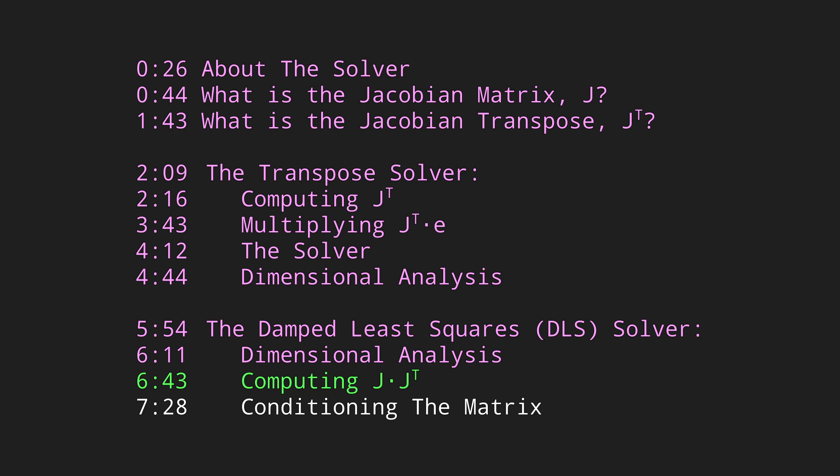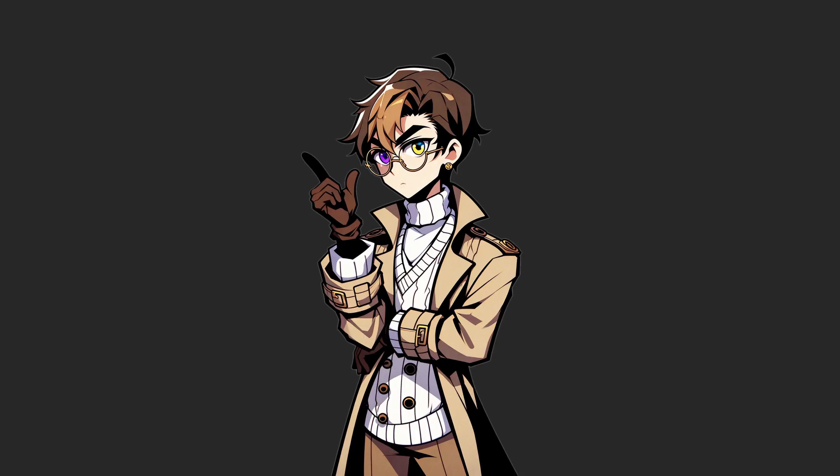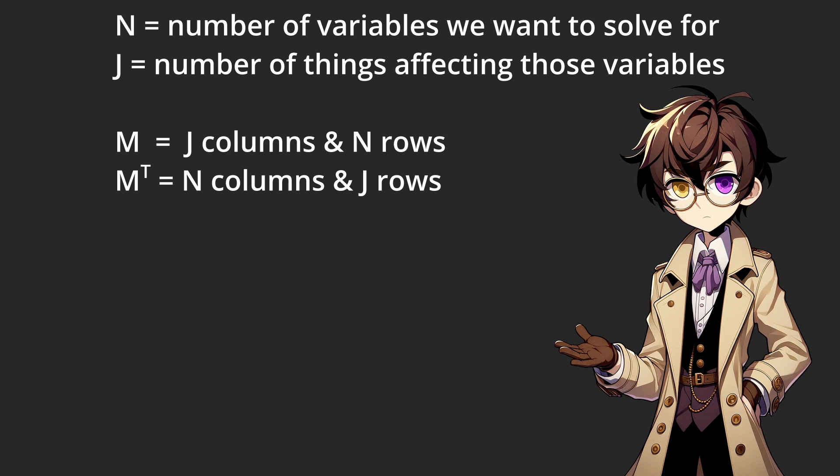Computing the Jacobian times the transpose. This step captures the cumulative effects of all joint movements and creates a basis for understanding how their movement will affect the end effector. Where n is the degrees of freedom of the grabber and j is the joints, the Jacobian matrix has n rows and j columns while the transpose has j rows and n columns. In matrix multiplication this means we're multiplying j by n by n by j and the result will be a j by j matrix.